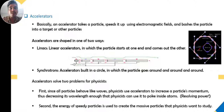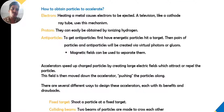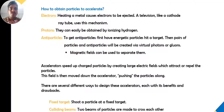What particles can we accelerate? The particles mainly used are electrons, protons, and antiparticles. To obtain electrons, we can use thermionic emission, photo emission, or field emission — all of which we have previously discussed. Electrons produced in these ways can be injected into a particular cyclotron or synchrotron.